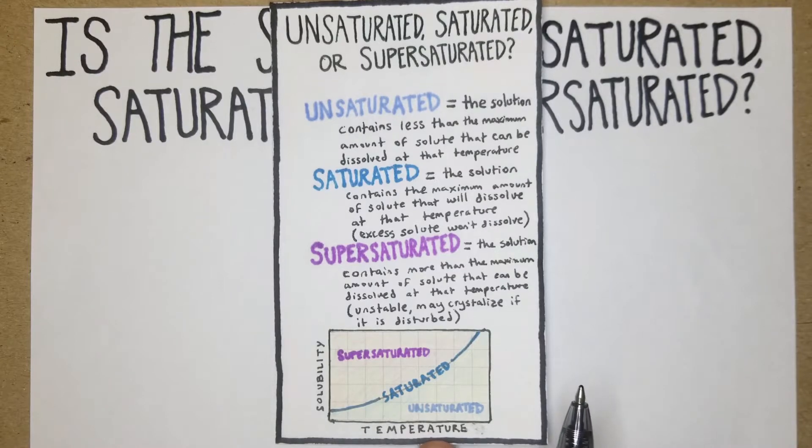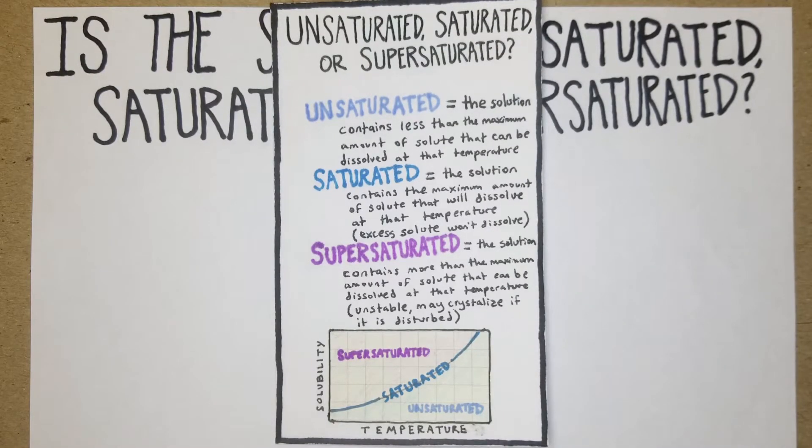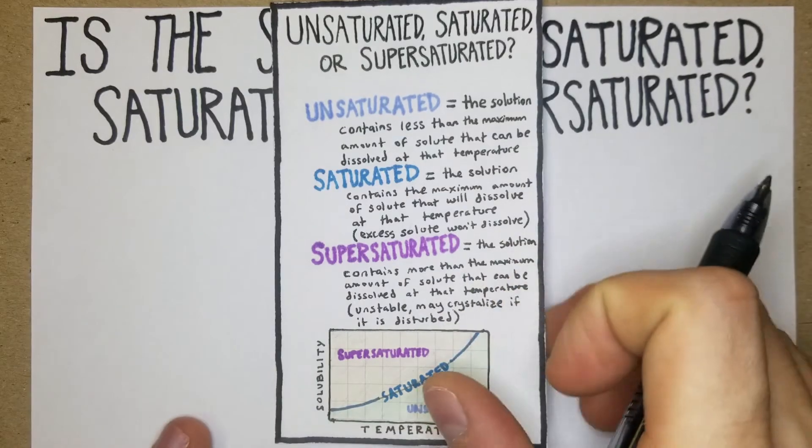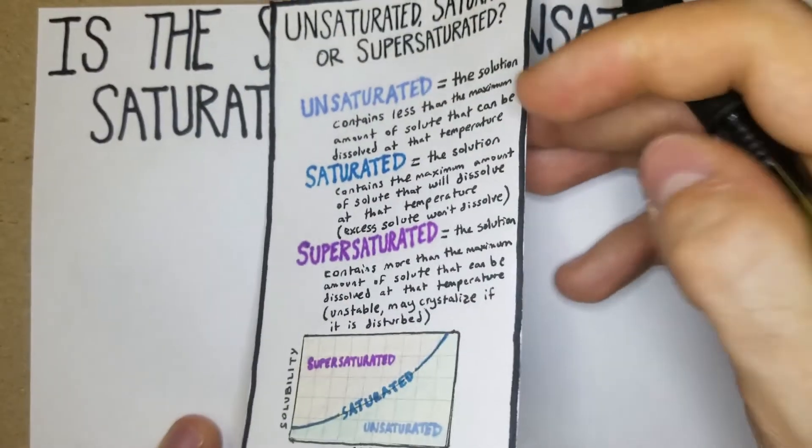This curve down here, the solubility curve, indicates basically where each area would be. If you're given a temperature and a solubility that's below the line, that's going to be unsaturated. If it's on the line, anywhere on the line, that's saturated. And anything above the line would be supersaturated. With that in mind, we're going to start jumping into some problems.